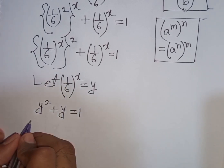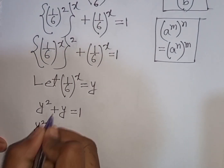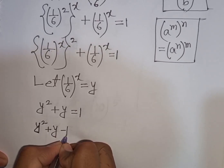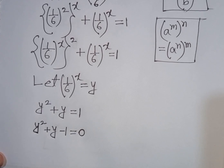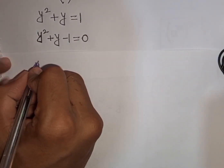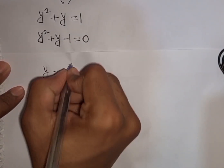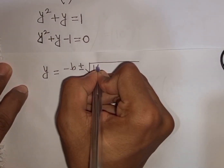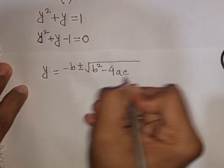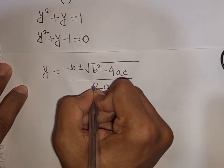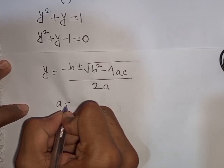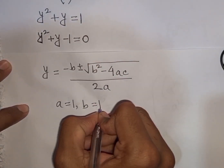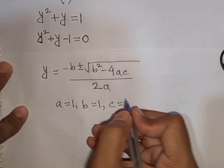Now, we write y² + y − 1 = 0. We apply the quadratic formula: y = (−b ± √(b² − 4ac)) / 2a. Here a = 1, b = 1, and c = −1.